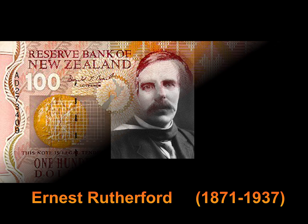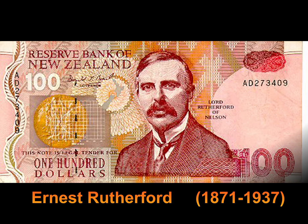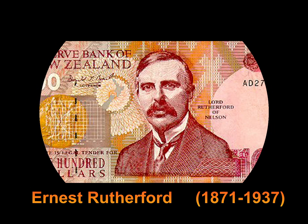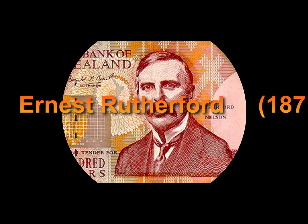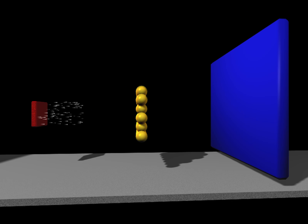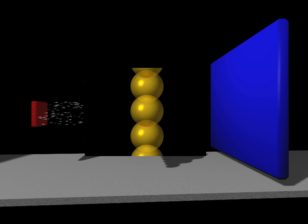How can this be explained? Of course, the heavy alpha particles could not be deflected by the electrons, because the electrons are so small and light like butterflies. A flying bullet cannot be deflected by butterflies. So by what? By this cake?